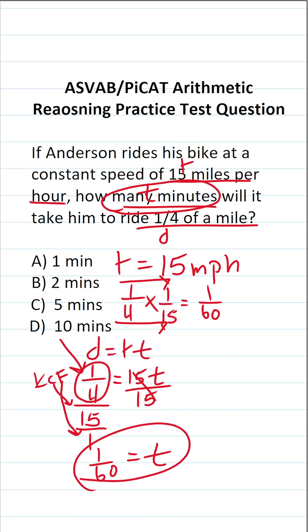This says it's going to take Anderson 1/60th of an hour to cover that quarter of a mile. Now let's convert this to minutes. Again, we're going to convert hours to minutes by multiplying this by 60 because there are 60 minutes in an hour. Let's make this math very easy to do by placing 60 over 1. And we can cross-reduce.